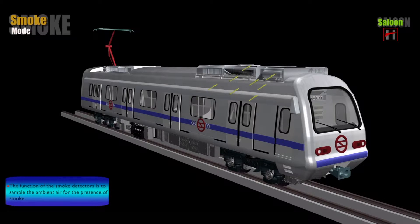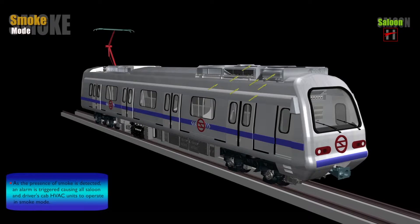The function of the smoke detectors is to sample the ambient air for the presence of smoke. As the presence of smoke is detected, an alarm is triggered causing all the saloon and driver's cab HVAC units to operate in smoke mode.